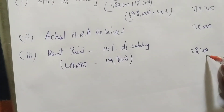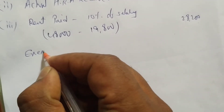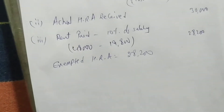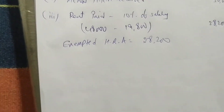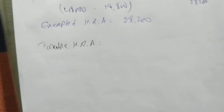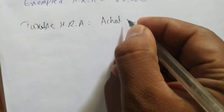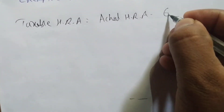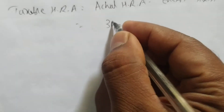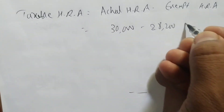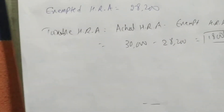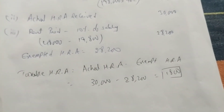The least of the three — 79,200, 30,000, and 28,200 — is 28,200. So exempted HRA is 28,200. Taxable HRA = actual HRA received minus exempted HRA = 30,000 minus 28,200 = 1,800. So 1,800 is taxable. Easy, right?